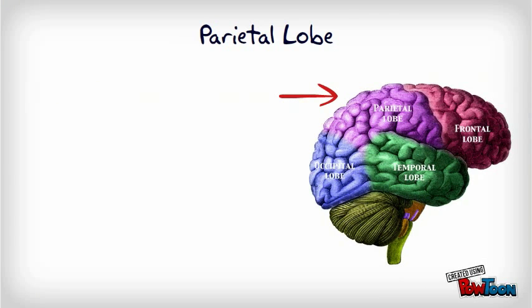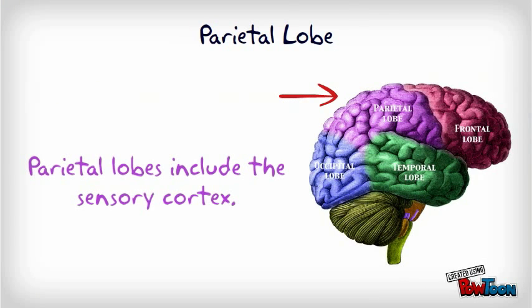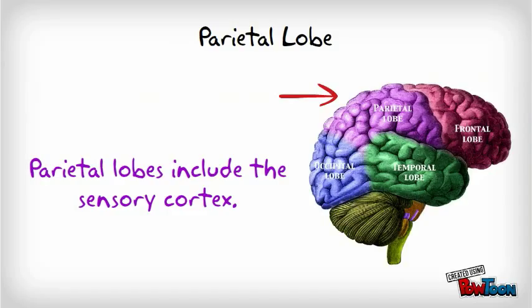Parietal lobes include the sensory cortex. Managing input from multiple senses, performing spatial and mathematical reasoning, and monitoring the sensation of movement are the many functions in the association areas behind the sensory strip that the parietal lobe has. The sensory strip deals with information from touch stimuli.